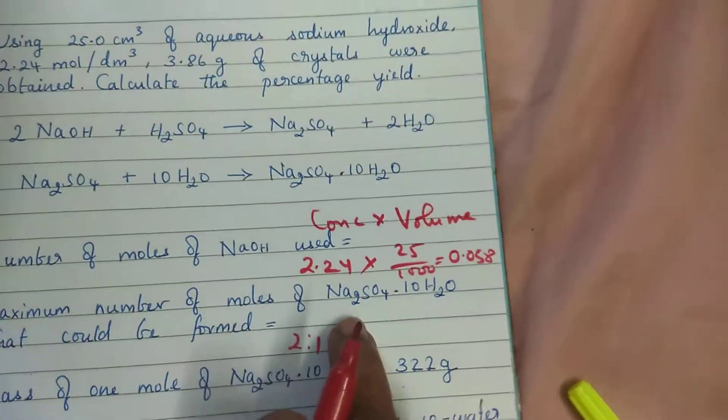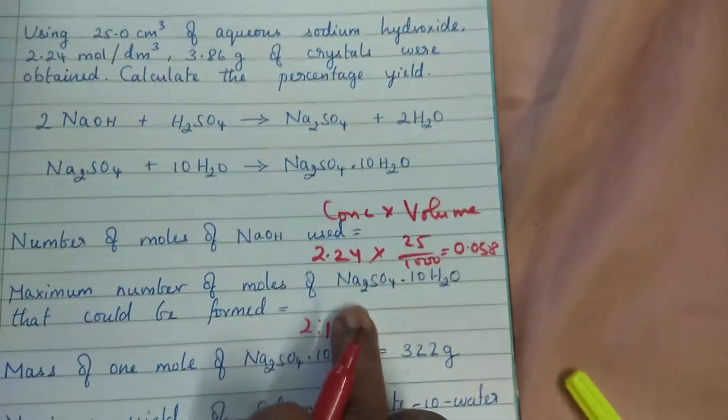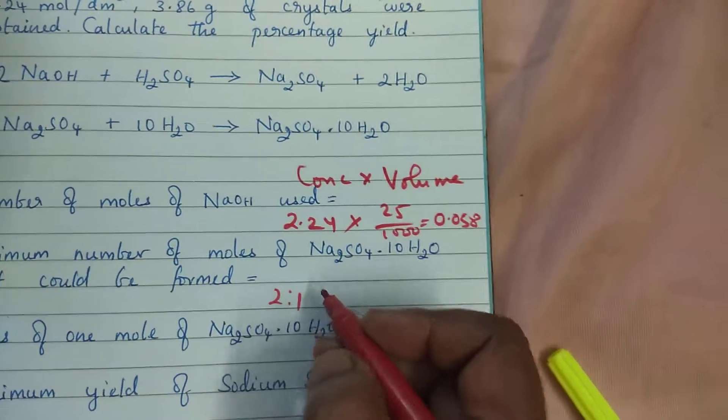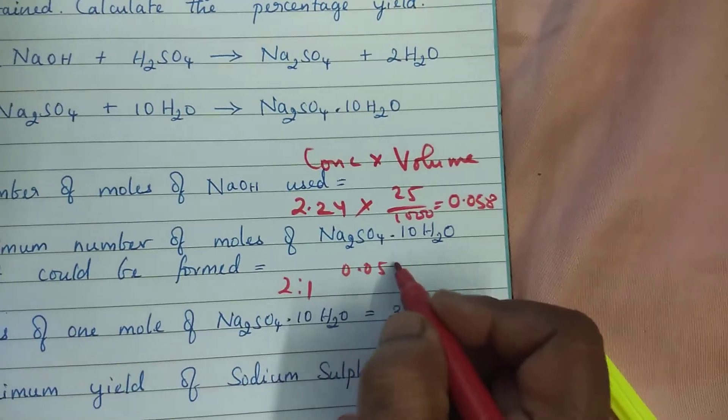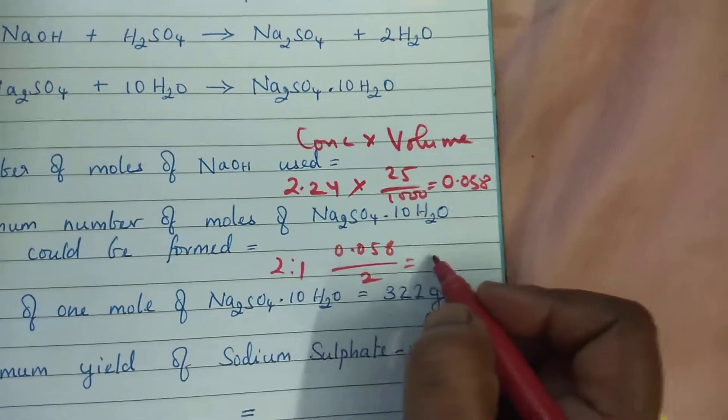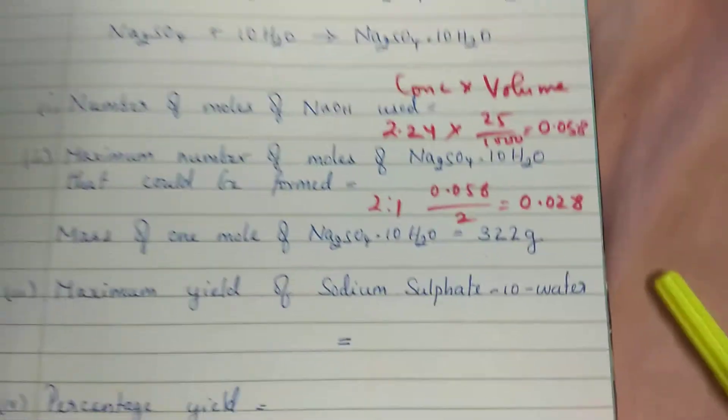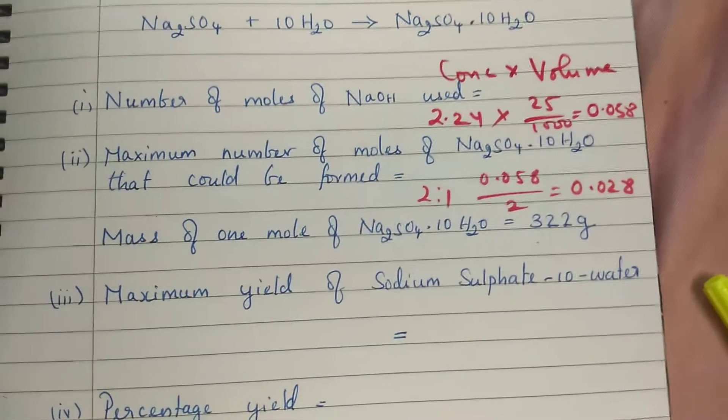If you take 2 is to 1, this divided by 2 you will get the value of Na₂SO₄, that is 0.058 by 2 will give you 0.028. So this is the moles of sodium sulfate hydrated sodium sulfate.